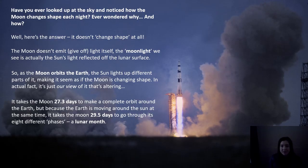Have you ever looked up at the sky and noticed how the moon changes shape each night? Well, it doesn't actually change shape at all. The moon doesn't give off light itself. The moonlight that we see is the sun's light reflected off the moon's surface. So as the moon goes around Earth, the sun lights up different parts of the moon, making it seem as if the moon is changing shape. But it's just our view of the moon that's changing.